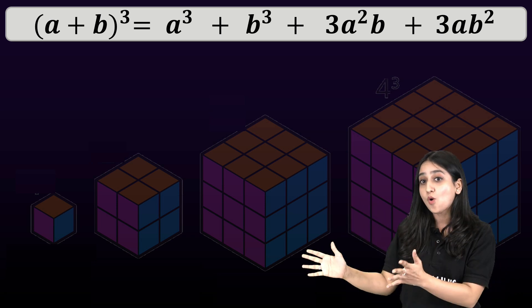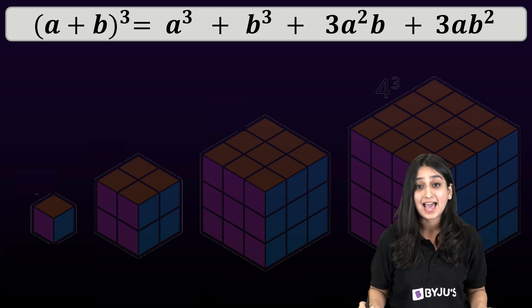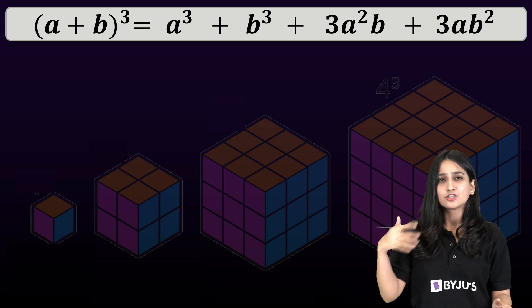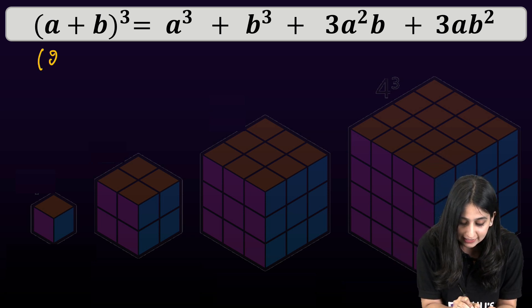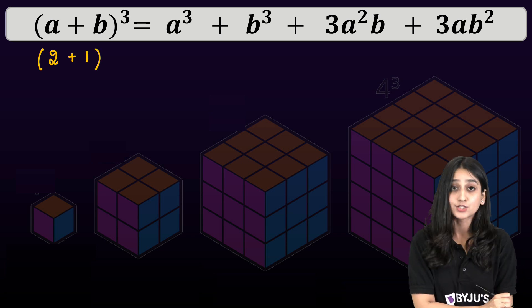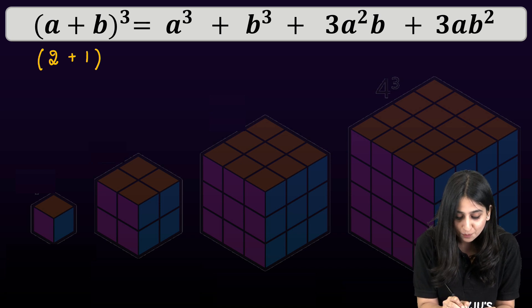Now before I move on to this activity, let's just quickly assign the values to these A and B's written over here. So let me say that I want to take A as 2. So I can write A as 2 over here. And if I say I want to take B as 1, so I can write B as 1 over here. So we will get 2 plus 1 cube.